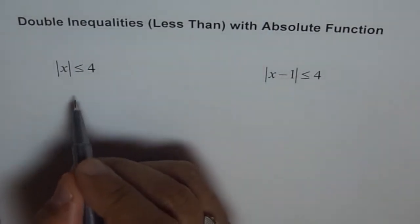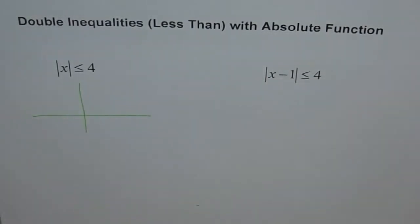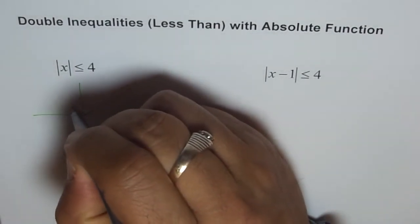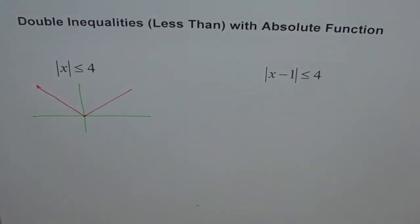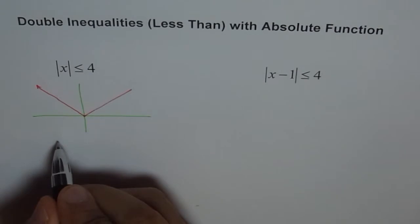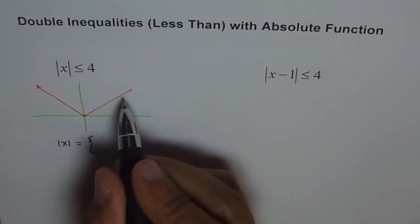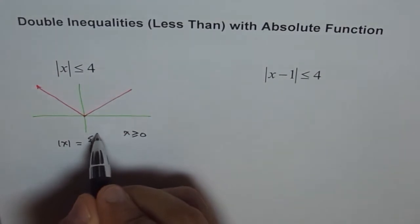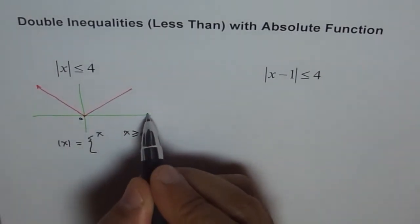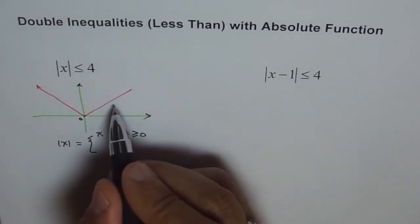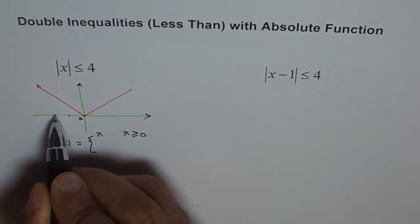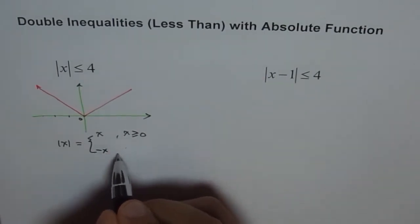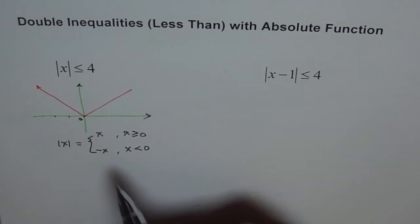If I have to plot my function absolute x, then how will it look like? Absolute x is kind of like a V-shape, and you define this function as absolute x equals — it's a piecewise function. When x is greater than or equal to 0, it is the same as x. But here, x has negative values while absolute x has positive values, so absolute x becomes negative of x if x is less than 0.